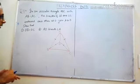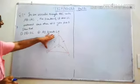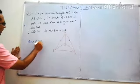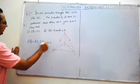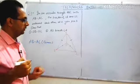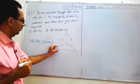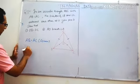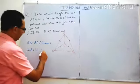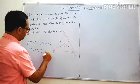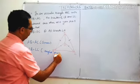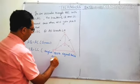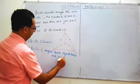We have to prove that angles are equal. Given that AB and AC are equal, and we have to prove angle B and angle C are equal. Angles opposite to equal sides are equal.